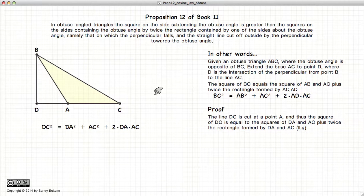Now to prove it. If we look at our line DC, it is cut into 2 at the point A. DC squared equals DA squared plus AC squared plus twice DA times AC. And this is from proposition 4 of book 2.